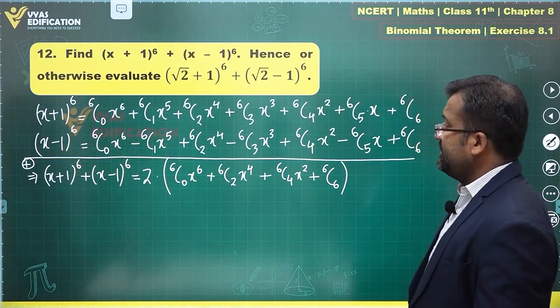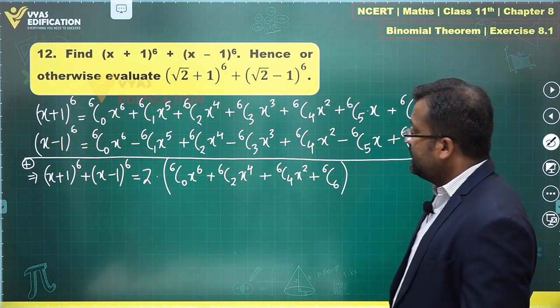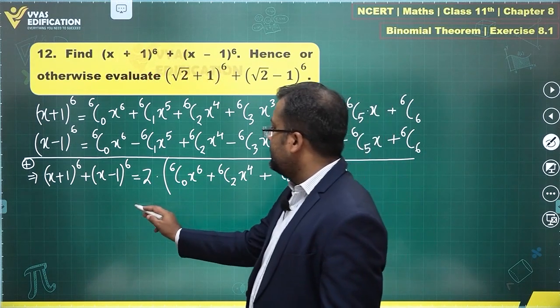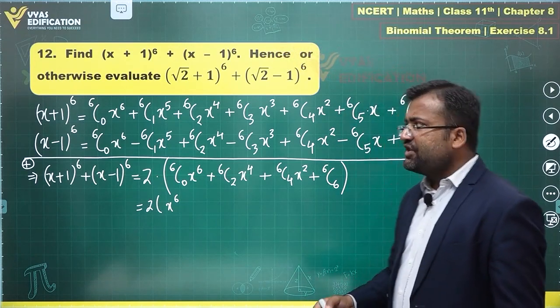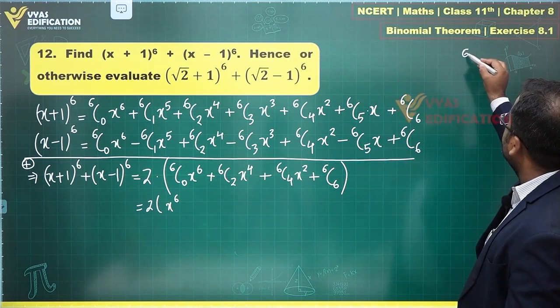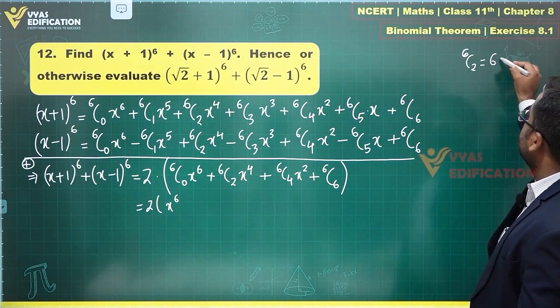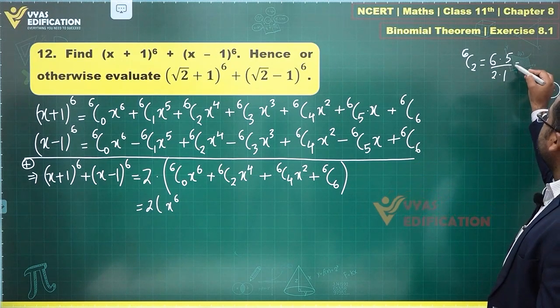Can we simplify it further? Yes, we can simplify it further. How do we do that? 6C0 is pretty simple. This is 2, which is okay. 6C0 is 1. This is x^6. What is 6C2? Let us find 6C2 separately. 6C2 is equal to 6×5/(2×1), which is 15.